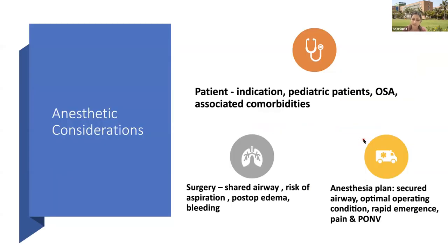Anesthetic considerations for adenotonsillectomy relate to the patient, surgery, and anesthesia plan. Patient-related risk factors relate to the type of indication — OSA patients are at higher risk. Pediatric patients themselves carry higher risk due to anatomical and physiological differences. OSA and associated comorbidities further increase the patient's risk. During surgery, the risk is increased by sharing of the airway. The risk of aspiration, postoperative edema due to airway handling, and bleeding are all risk factors, as clots may dislodge leading to primary and secondary hemorrhage.